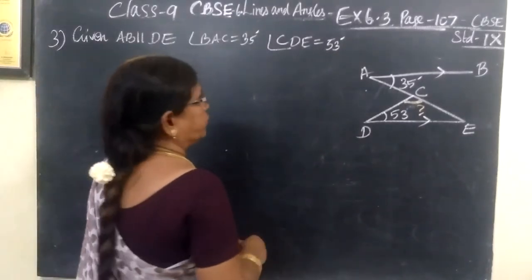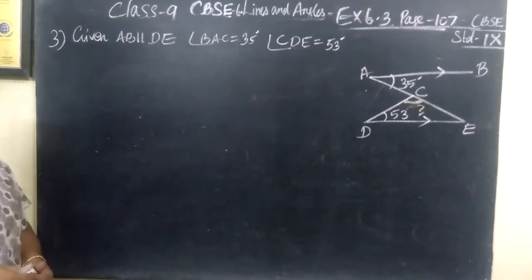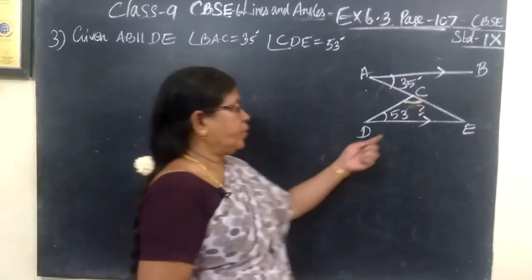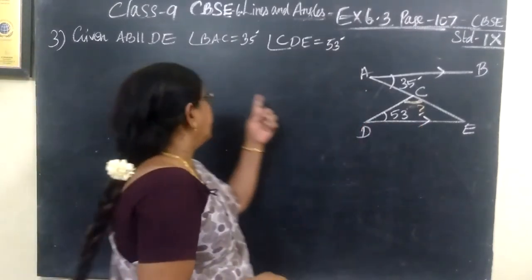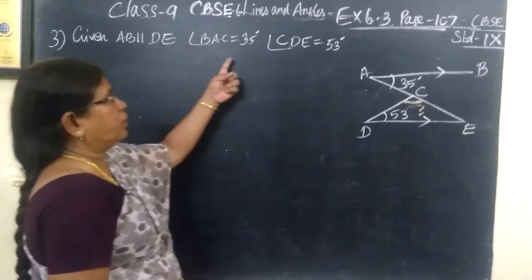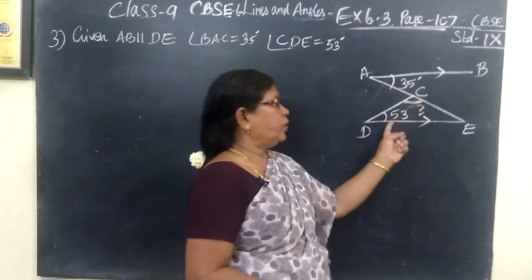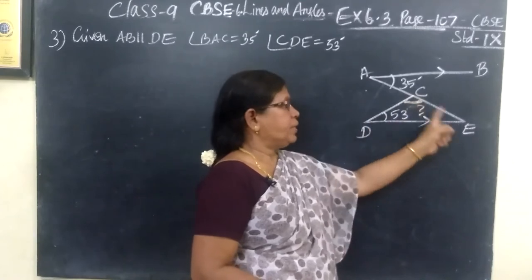Now, question number 3 in exercise 6.3. In this figure, it is given AB parallel to DE, and two angles are given. We want to find angle DCE.